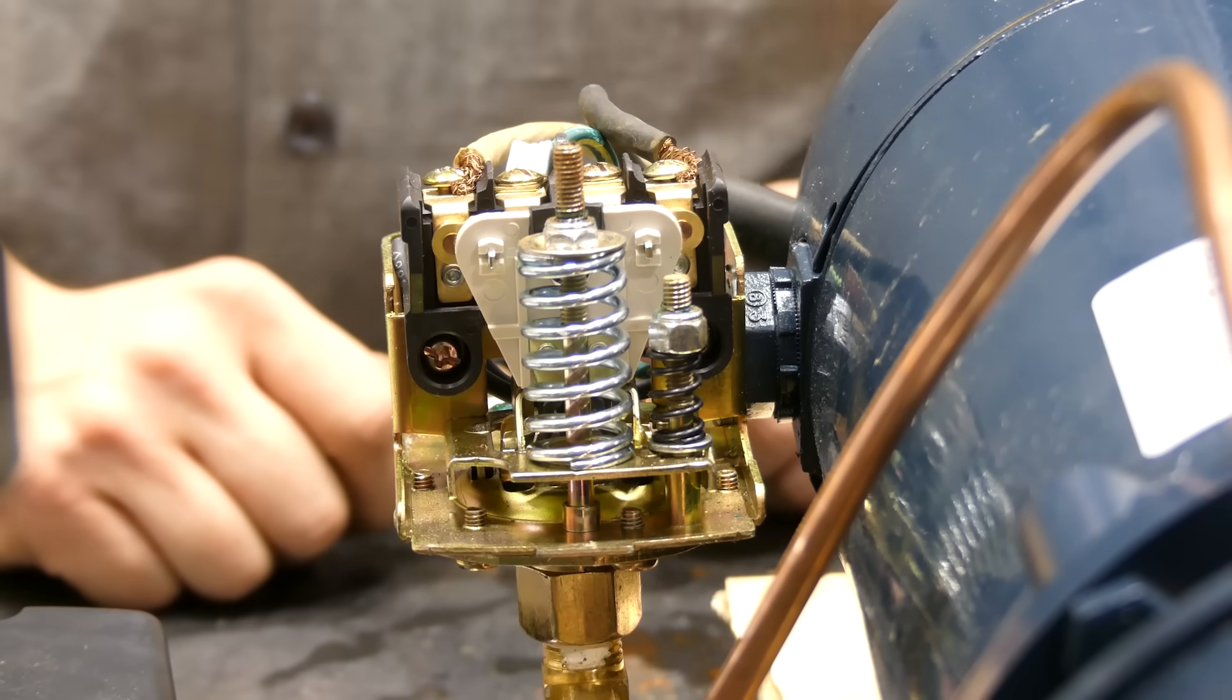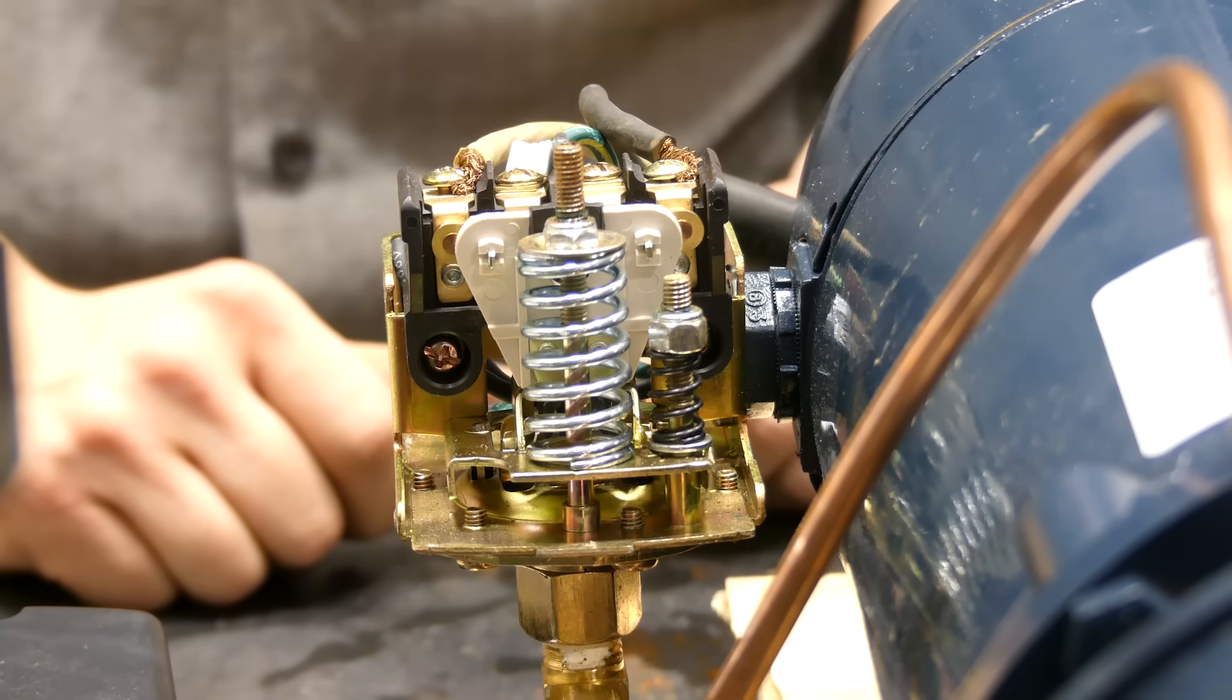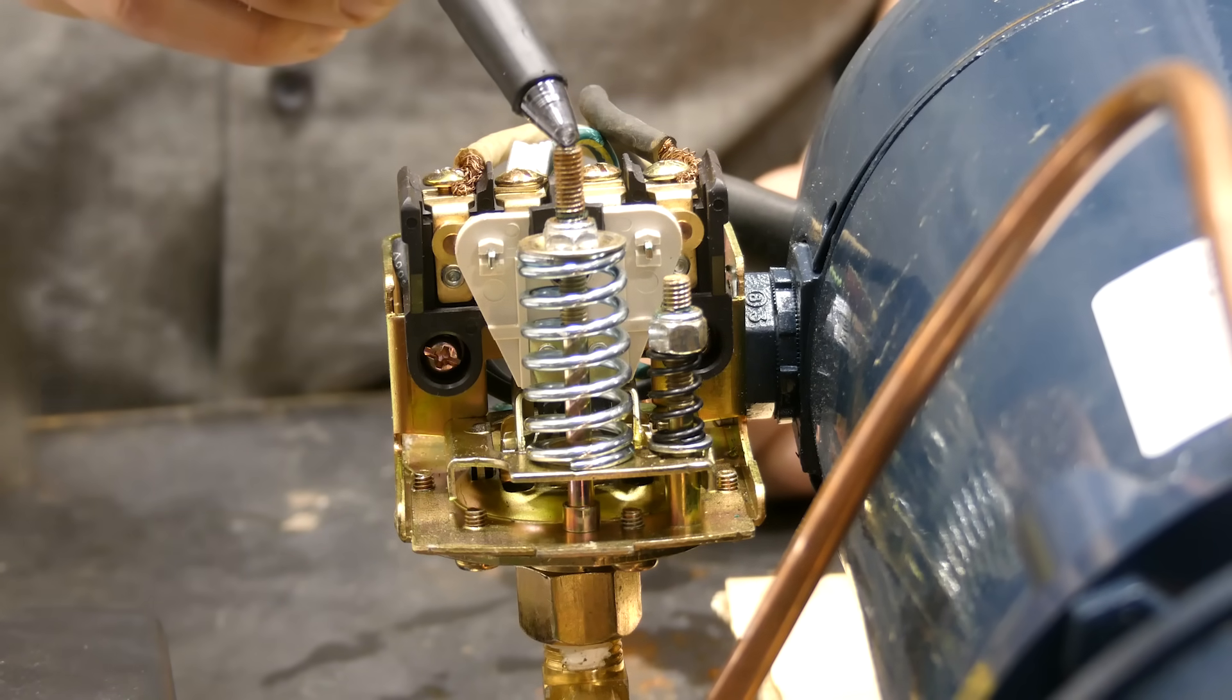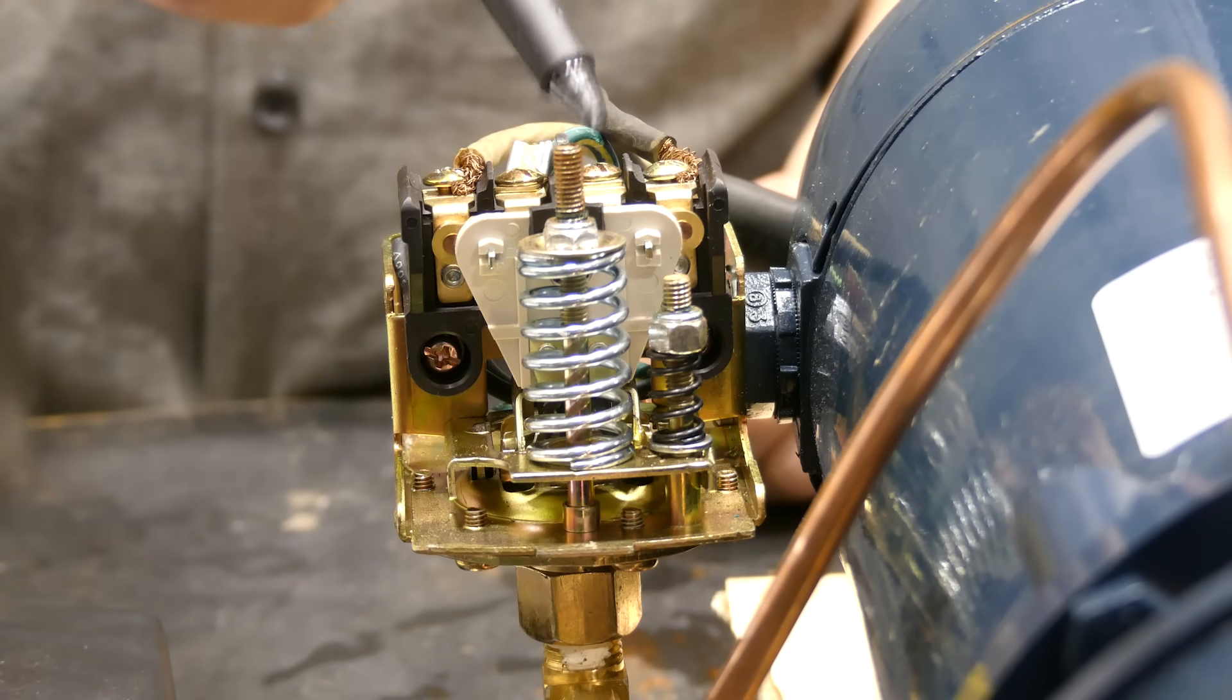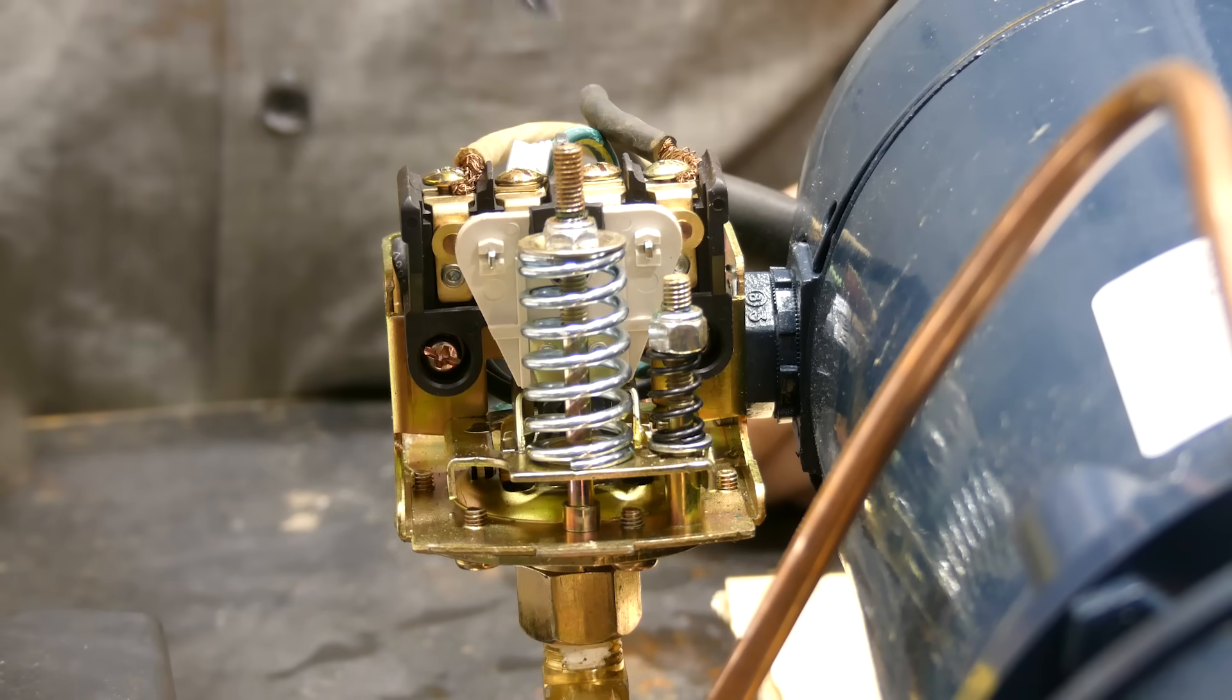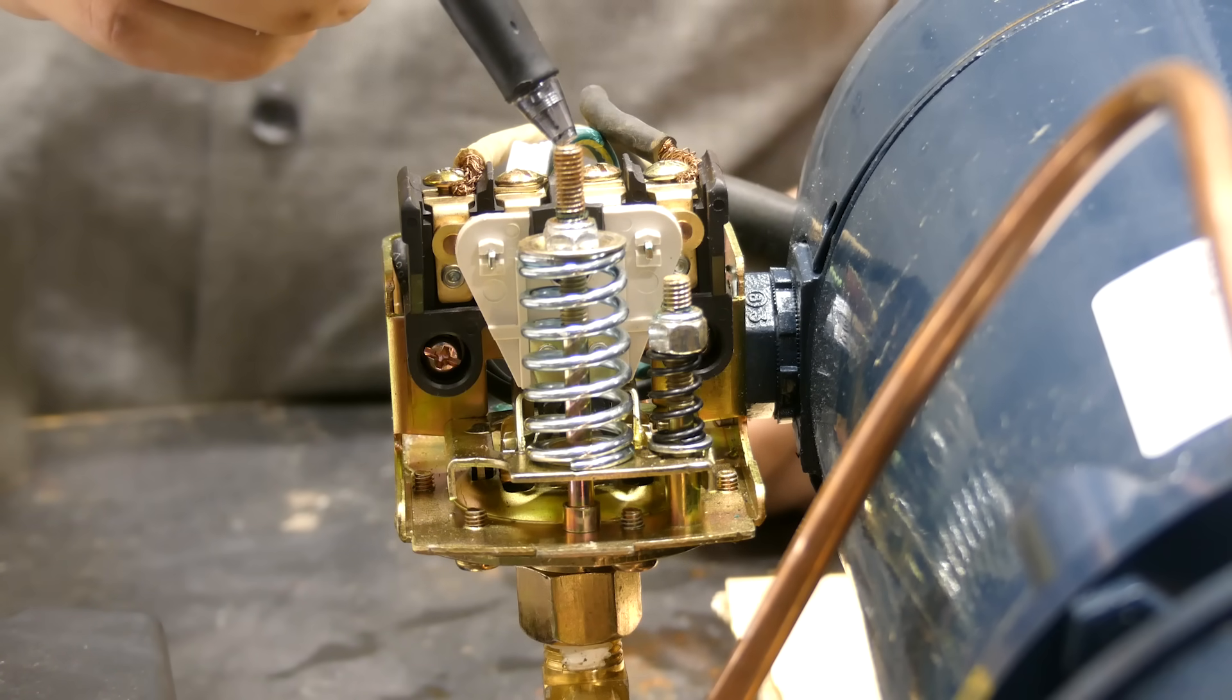You'll find most pressure switches operate with a 20 PSI or 20 pound differential. Adjusting the center nut will raise or lower the range. So you could potentially increase or decrease the range of that 40/60 or 30/50 that we're preset with.